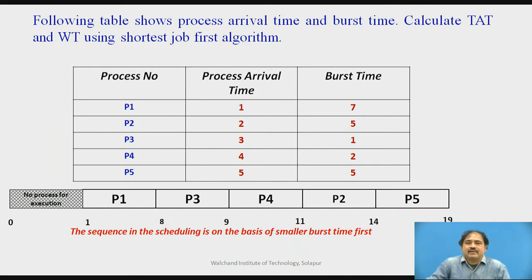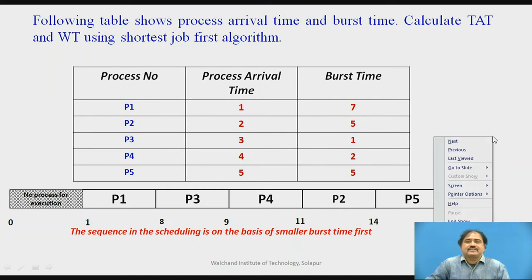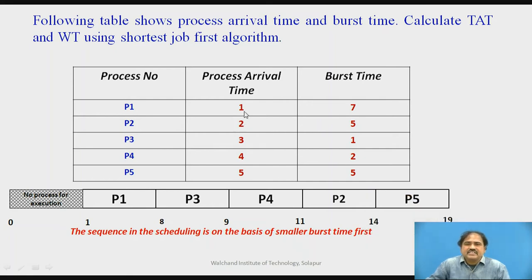Going back to the same example, let's draw a Gantt chart. A Gantt chart shows the different processes in sequence along with timings written at the bottom. We always start execution at the 0th time instant. In this case, P1 is arriving at the first time instant. Since the CPU starts at the 0th time instant but no process is available in the ready queue at that point, the 0 to 1 time interval is unused.